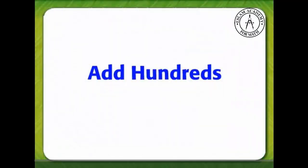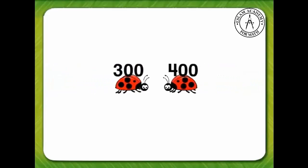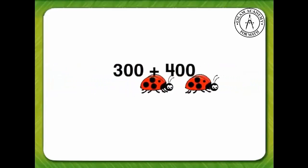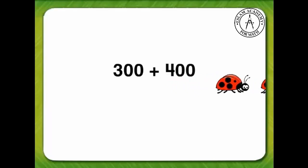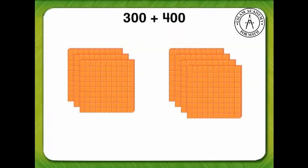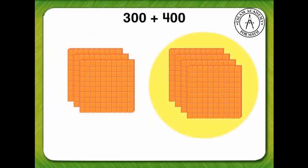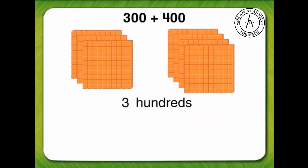We can use addition facts to add numbers in the hundreds. Let's find 300 plus 400. We will use base-10 blocks to show the problem. These three flats show 300, and these four flats show 400.